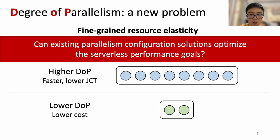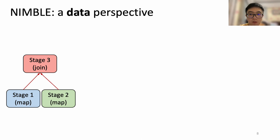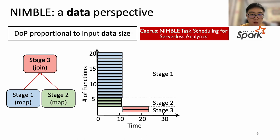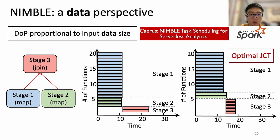Here we are wondering: can existing parallelism configuration solutions optimize serverless performance goals? We have a simple SQL query example with three stages. The widely adopted solution, applied by academic works like Nimble and also Spark's default parallelism setting, follows the perspective of data — it adjusts the DOP of each stage proportional to the input data size. Assuming execution time is proportional to data size, Stage 1 processes more data, so it has the highest parallelism, and JCT is greater than 20. However, to minimize JCT, we need to consider data dependencies. Increasing the DOP of the downstream stage (stage 3) and decreasing the DOP of the other two stages reduces JCT to less than 20.